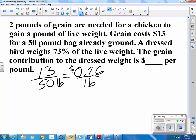So that was pounds and that was dollars. So 26 cents per pound of grain for live weight. And so 2 pounds of grain times 26 cents per pound. That would be pounds. Pounds cancel when we just have a cost of 52 cents.